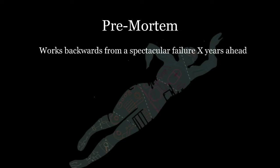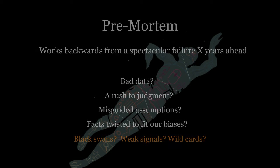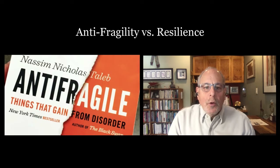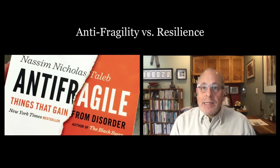It's important to draw lessons from past catastrophes. But what if we work backwards from a disaster 10 years from now? Was it bad data, rush to judgment, misguided assumptions, facts twisted into our biases? Did we not see the black swans and weak signals and wild cards? What if the goal is not just survival or resilience, but strength? Nassim Nicholas Taleb's book Anti-Fragile addresses just that.